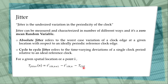Jitter is also a problem for setup and hold violations, and this will be considered in a later stage. Both skew and jitter are added as derates to the clock paths themselves. These are very important considerations, and without accounting for them, the chip functionality or timing may not work correctly. This has been a brief discussion on clock skew and clock jitter.